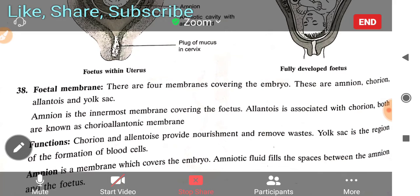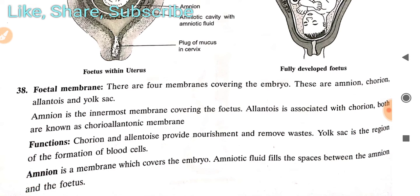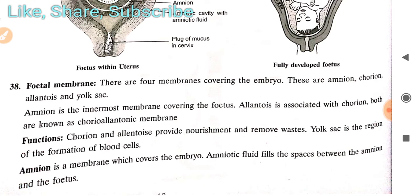The fetal membranes are the four membranes covering the embryo: amnion, chorion, allantois, and yolk sac. An important exam point is that amnion is present only in chordates. Amnion is the innermost membrane covering the fetus. Allantois is associated with chorion, and both together are known as the chorioallantoic membrane. The functions: chorion and allantois provide nourishment and remove waste from the embryo. The yolk sac is the region of blood cell formation — sometimes questions are asked about this.